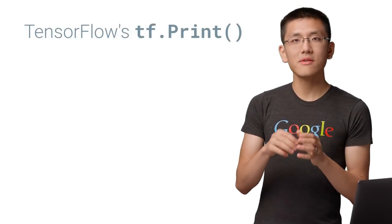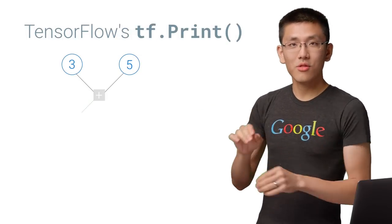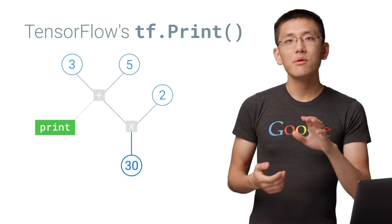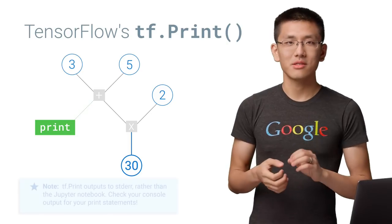If you want to print the values that are flowing through a particular part of the graph as it's being executed, then we'll need to turn to using tf.print.